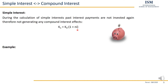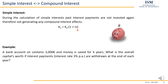Let's look at a quick example. We have a bank account containing 3,000 euros and money is saved for four years, so n is 4. What is the overall capital's worth if interest payments with an interest rate of 3% per year are withdrawn at the end of each year? So this means we're talking about simple interest. Inserting the values — k0 = 3000, n = 4, i = 0.03 — into the formula gives: 3000 times (1 + 4 × 0.03), which results in a final value of 3,360 euros after four years.